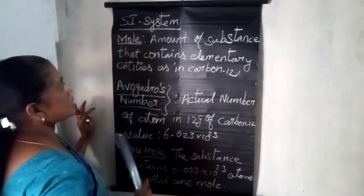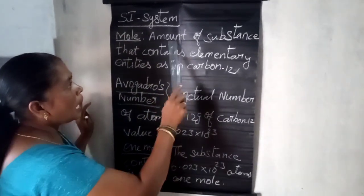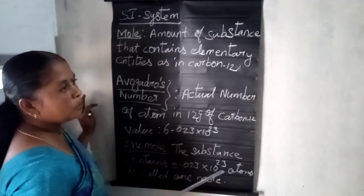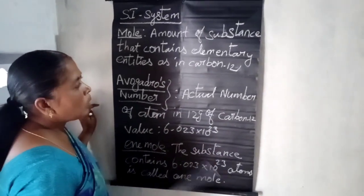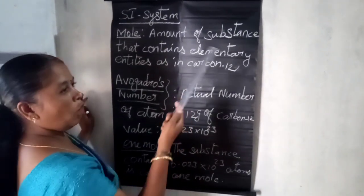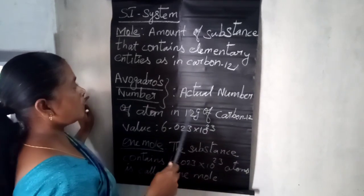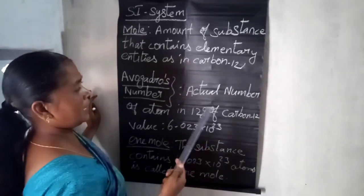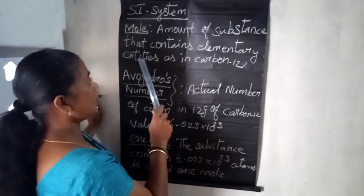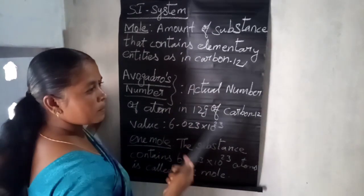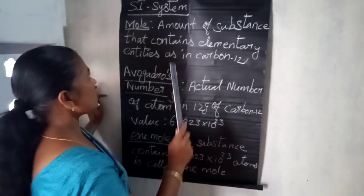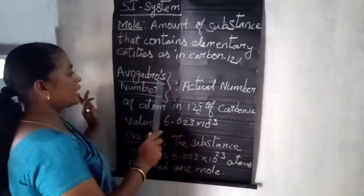Next, the SI system: in the SI system, a mole is defined as the amount of substance that contains as many elementary particles as there are atoms in carbon-12. One mole refers to how many atoms, molecules, or particles are present in an element or substance, determined by reference to the carbon-12 isotope.